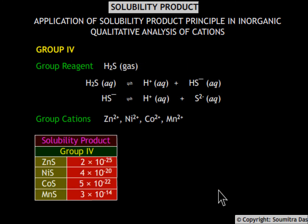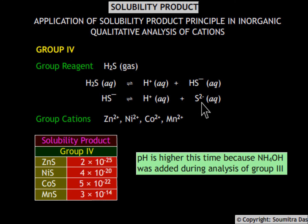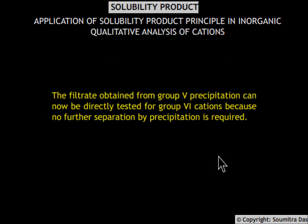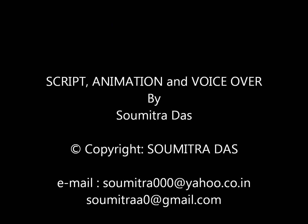In Group 4, the reagent is again H₂S gas, but this time the pH is higher than before, so more sulfide ions are present, which is enough to precipitate the Group 4 sulfides. In Group 5, the reagent is ammonium carbonate. Due to the common ion ammonium, very few carbonate ions are available, which is enough to precipitate the Group 5 metal carbonates but not the Group 6 carbonates which have a higher solubility product. The filtrate from Group 5 can be directly tested for Group 6 cations as no further separation by precipitation is required.